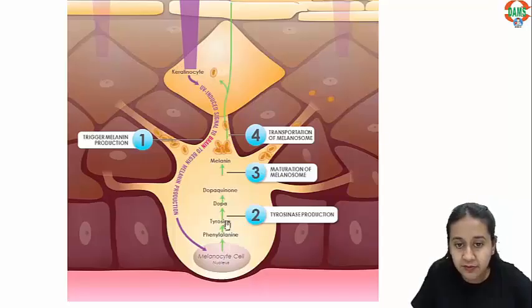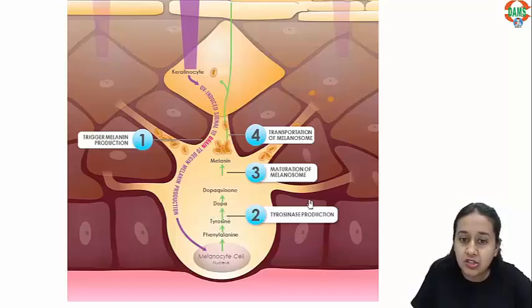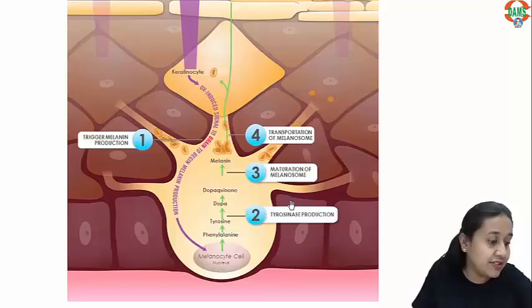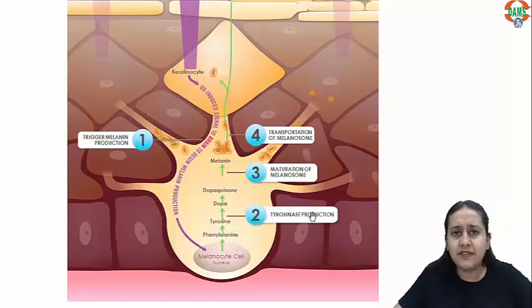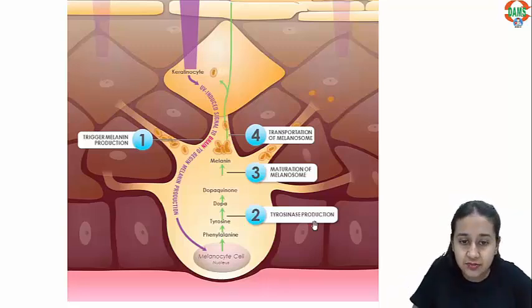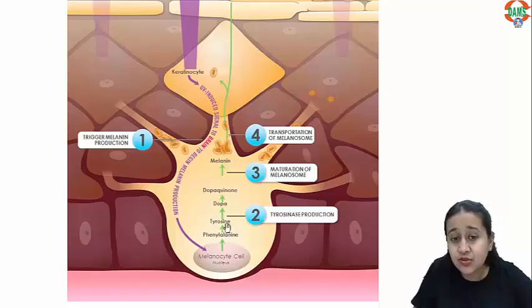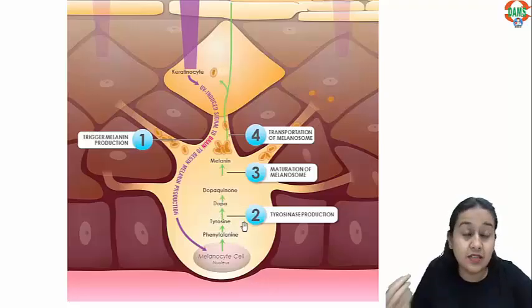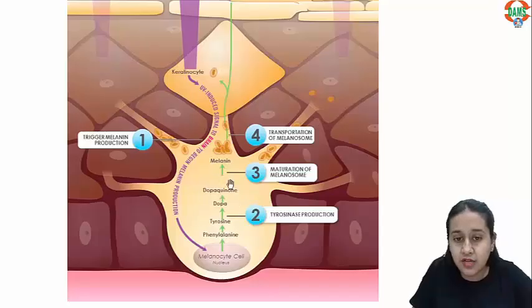Inside the melanocyte you have production of the pigment with the help of an enzyme tyrosinase, which converts tyrosine into dopa. So step two is you can block this tyrosinase - tyrosinase inhibitors. Many drugs, for example hydroquinone, a very famous and commonly used depigmenting agent, it works by inhibiting the tyrosine to dopa conversion.